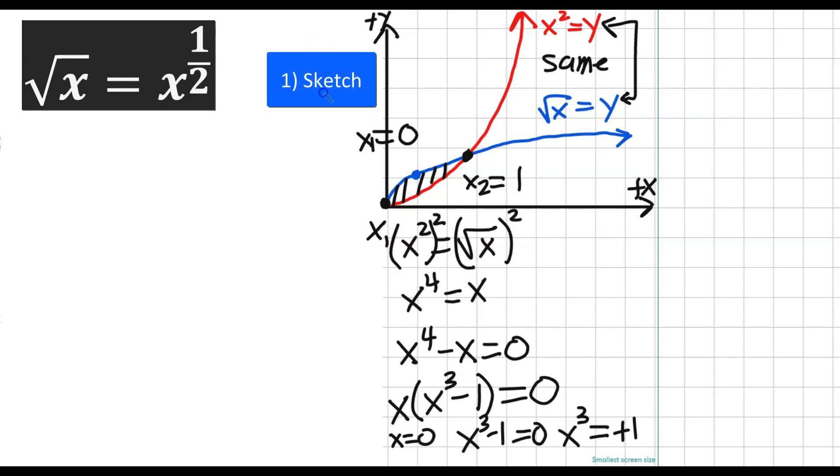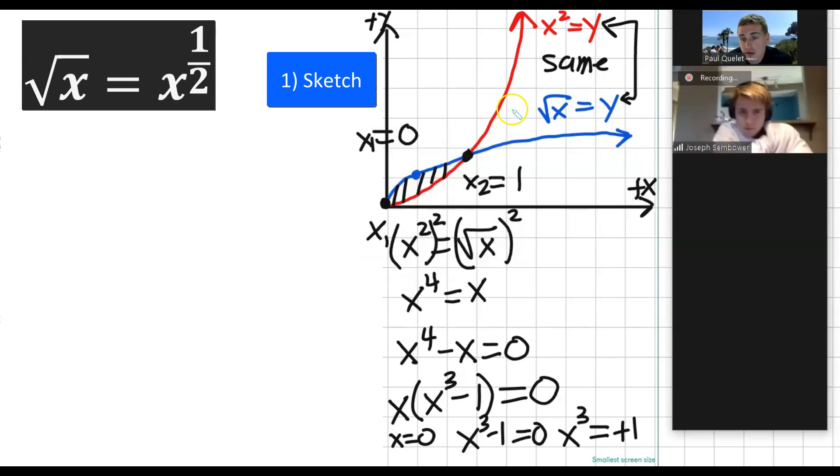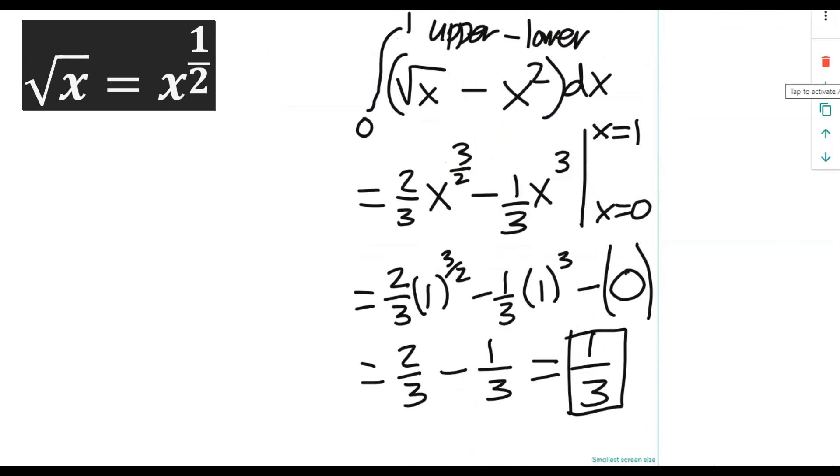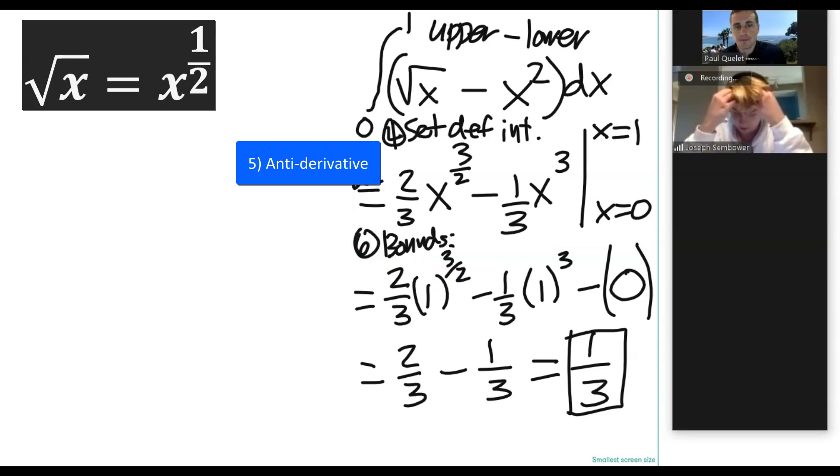So let's review the steps. I would sketch. I mean, it doesn't need to be a perfect sketch, but some sort of sketch. And by the way, if you have a graphing calculator, this will help you too. Set equal to find the points of intersection. Yes. Then what's the next step? Solve for what? Solve. Yeah. So the bounds. So solve for those. Okay. So we've got those are our bounds. Then we do what here? We set up the definite integral. Yes. And then what are we doing here? Yep. Anti-derivative. And then we use the bounds. Good. Love it.